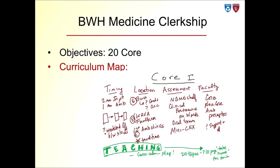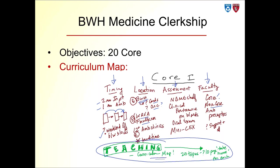The second piece was designing and building a curricular map. I used a blue-sky organizational process. I thought about timing — two months on the inpatient block, one month on the ambulatory block, with weekends off. Then locations: everyone at least one month at the Brigham, possibly using cardiology or oncology, with a second month at two other institutions — VA Hospital or Faulkner. I also mapped out all assessments and thought about who would serve as core faculty versus non-core faculty over the course of 12 weeks.